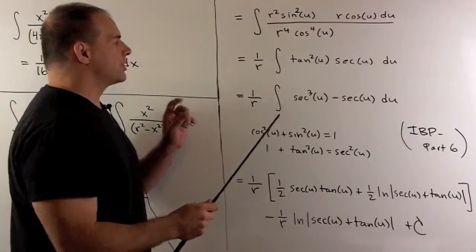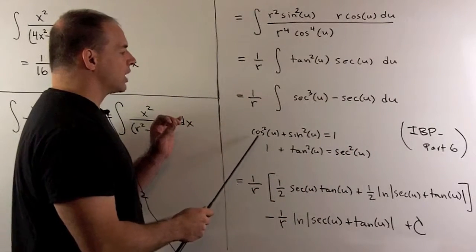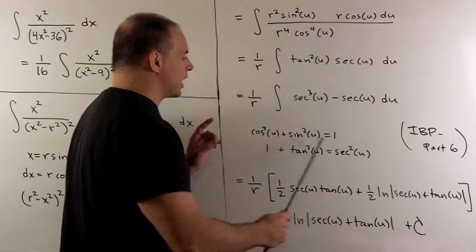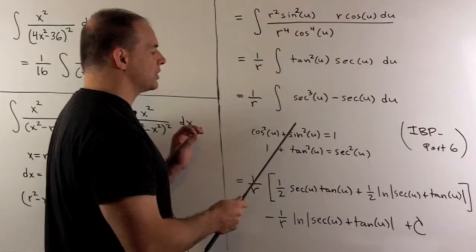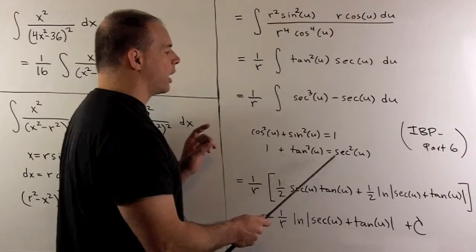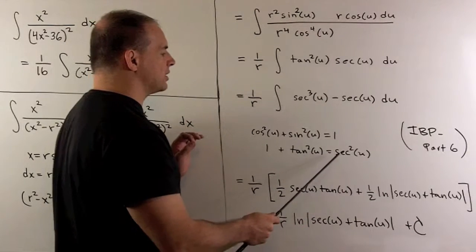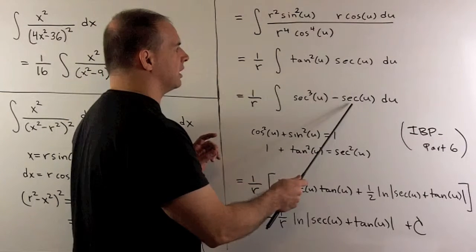Now, I want to substitute out to get everything in terms of secant. So, the way I do that, we note cosine squared plus sine squared is equal to 1. I divide through by cosine squared. That gives me 1 plus tan squared, which is sine squared over cosine squared. It's equal to 1 over cosine squared, which is secant squared. Now, I can write tan squared as secant squared minus 1. And that's how I get to secant cubed minus secant.